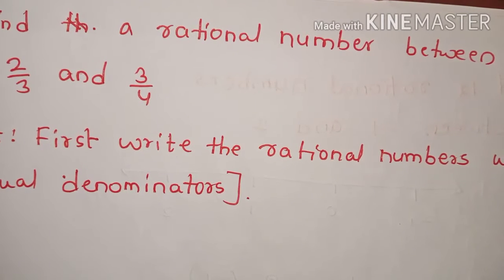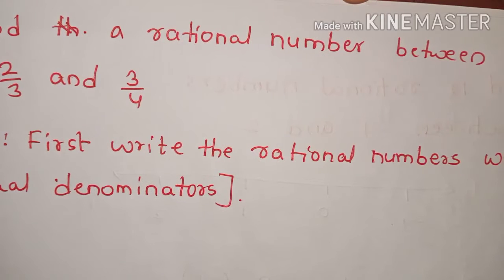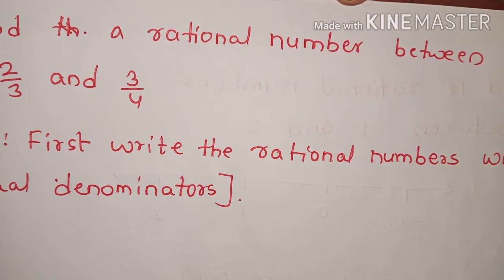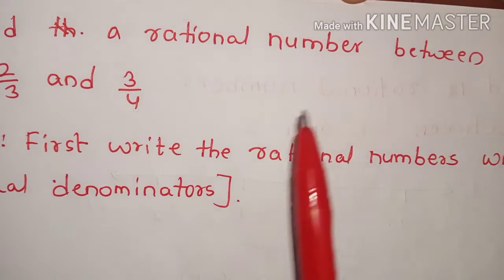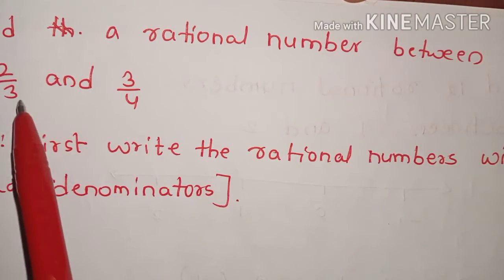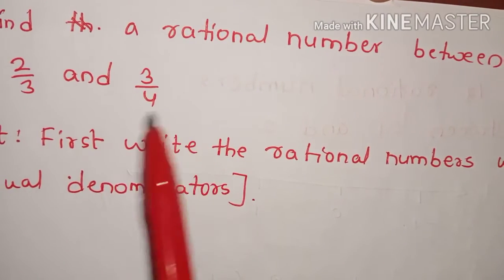The 5th problem is: find a rational number between 2 by 3 and 3 by 4.